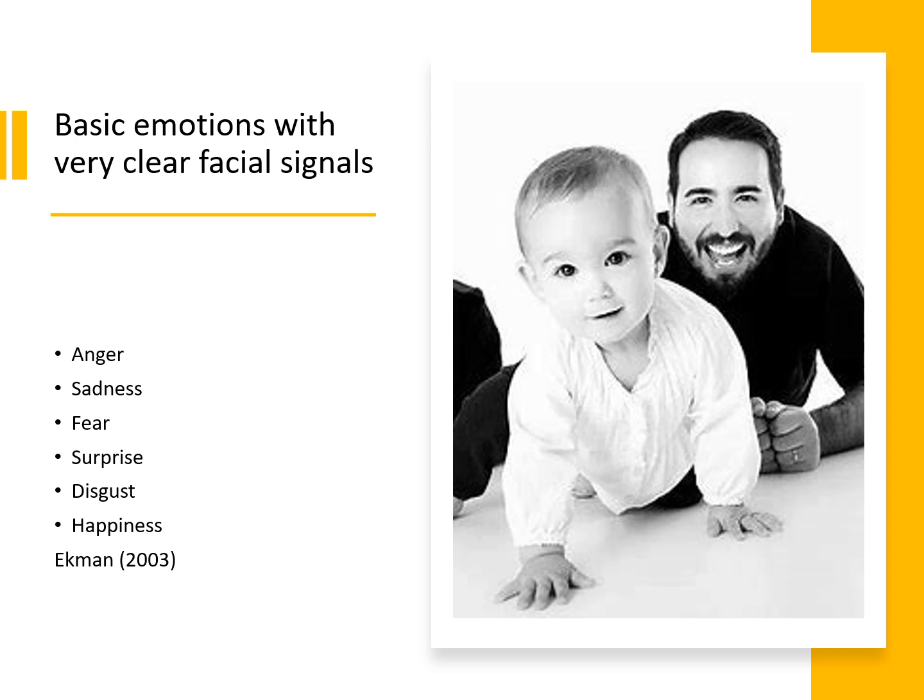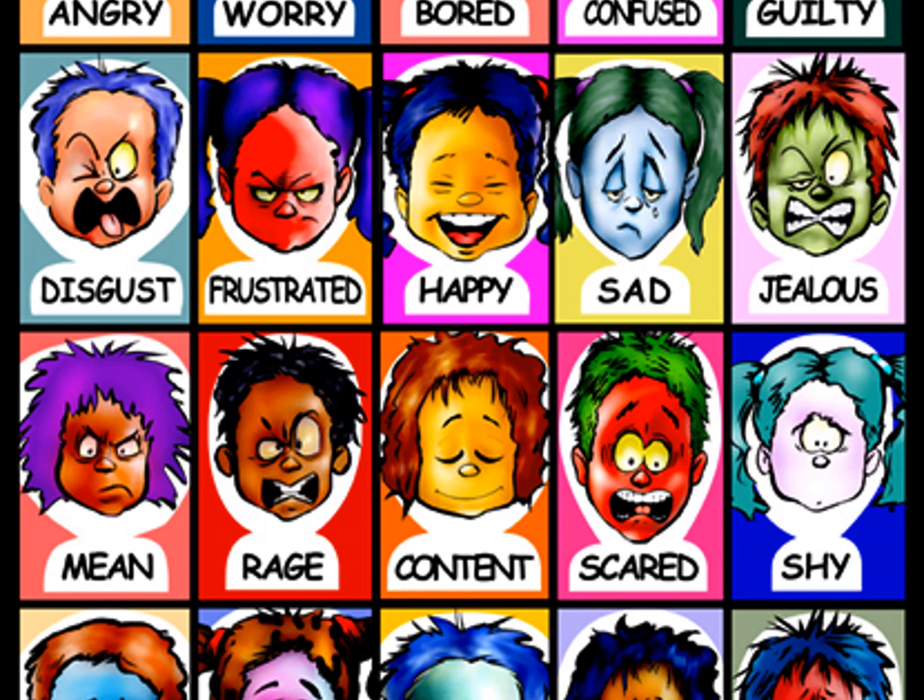Ekman, as far back as 2003, highlighted basic emotions with clear facial signals that are cross-cultural — anger, sadness, fear, surprise, disgust and happiness. If we're teaching children an emotional vocabulary, we might start with 4–5 emotions and begin to extend that range, using visuals, emojis, etc., to prompt children to learn, remember and broaden their emotional vocabulary.